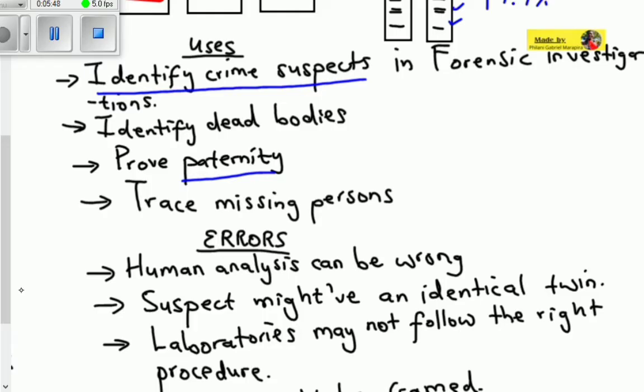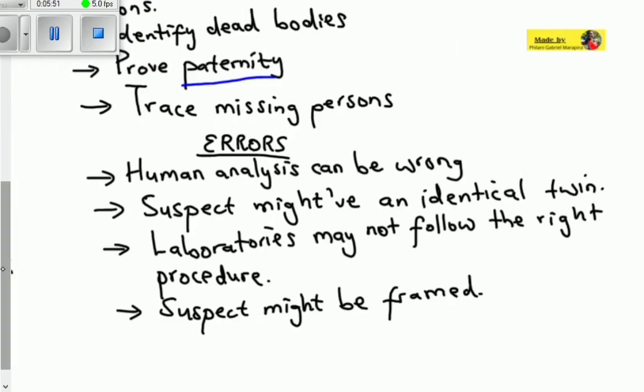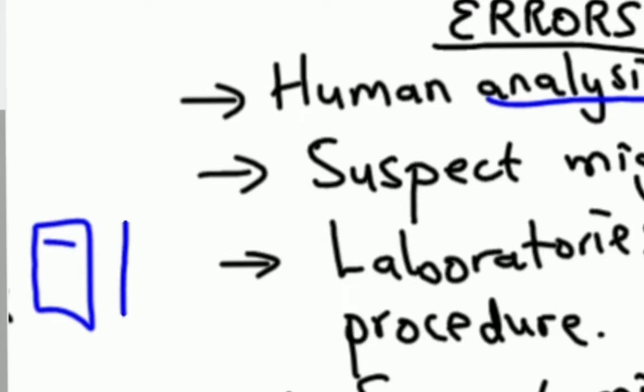This DNA profiling procedure can have its own errors. Number one, it is analyzed and interpreted by a human. Supposedly, we have a DNA profile here, and you can see these two band lines have almost similar positions, but they are not the same positions. It's possible for someone to have a band line in that position and people assume that these DNA profiles match. Human error can occur when analyzing a DNA profile.